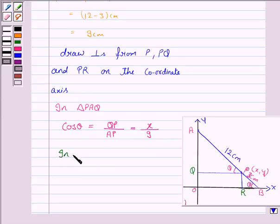In triangle PRB, sin theta is equal to PR upon PB or BP. PR has length y cm because the coordinate of the point P is P(x,y), and PB has length 3 cm.